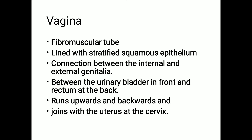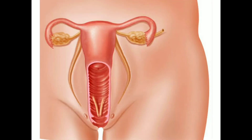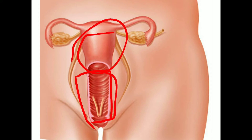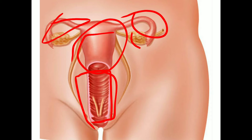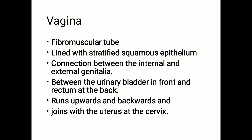In the diagram you can see the vagina, then the uterus, the uterine tubes on either side, and the ovaries on either side of the uterus. Today we will discuss first about the vagina, and in coming classes we will discuss about the uterus, uterine tubes, and ovaries.